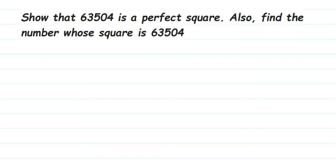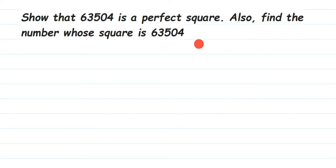Here's a question from squares and square roots: show that 63504 is a perfect square, and also find the number whose square is this number. First we have to find out if this number is a perfect square, and later we have to find out whose square it is — that is, we have to find the square root of this number.